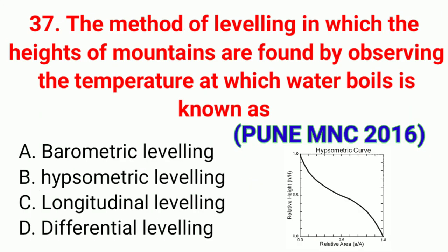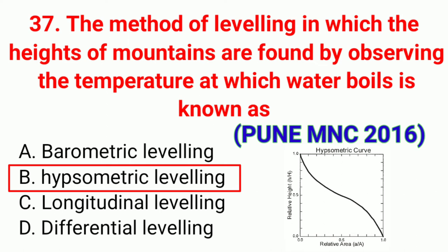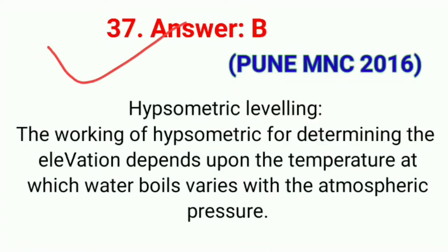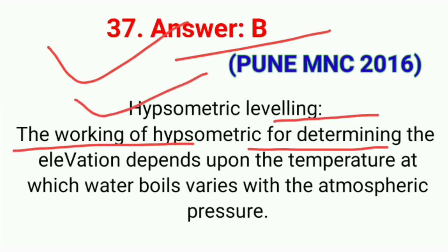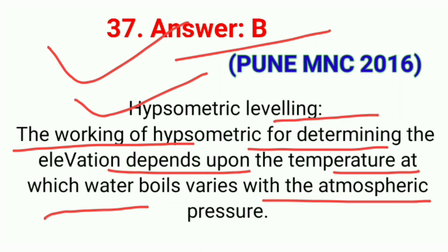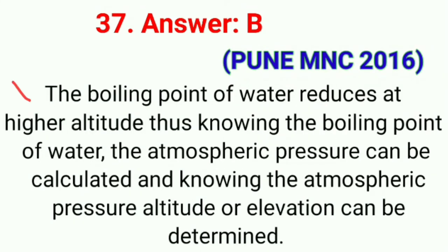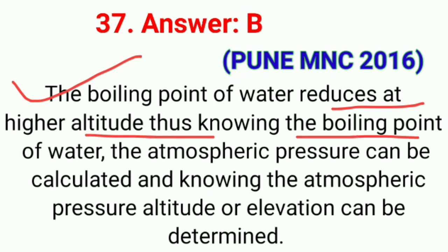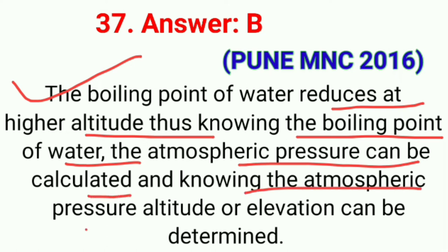Question number thirty-seven: The method of leveling in which the heights of mountains are found by observing the temperature at which water boils is known as. The correct answer is option B, hypsometric leveling. Hypsometric leveling determines elevation based on the fact that the temperature at which water boils varies with atmospheric pressure. The boiling point of water reduces at higher altitude; knowing the boiling point, atmospheric pressure can be calculated, and from that, the altitude or elevation can be determined.